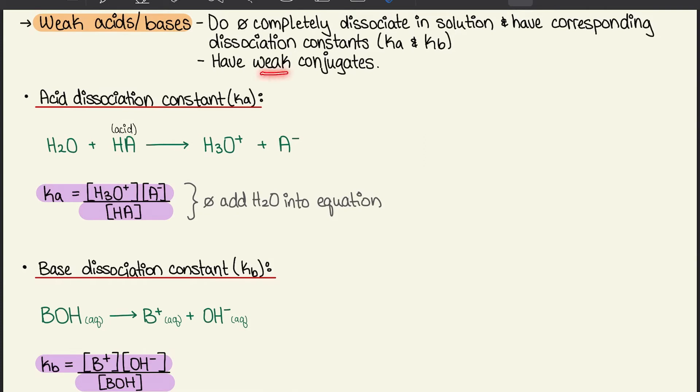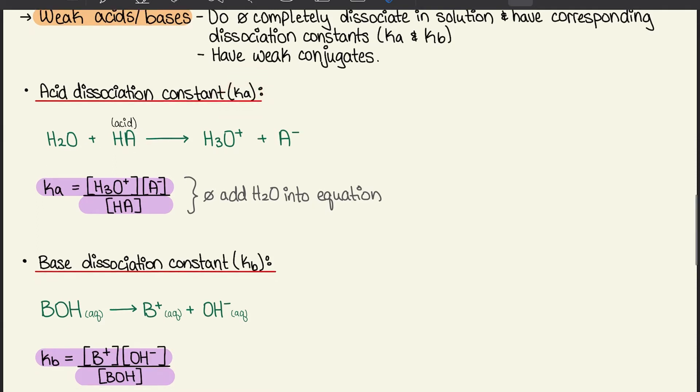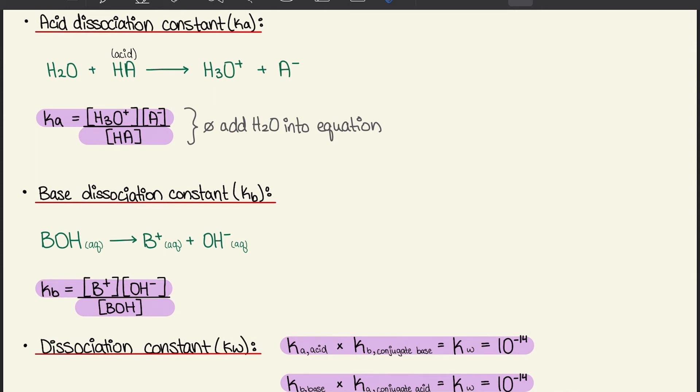For acid dissociation constant Ka, we have water plus an acid HA dissociating into hydronium and A-. We can write that as Ka equals products over reactants: H3O+ times A- over HA. Don't add H2O in the equation because that's just a neutral element here.